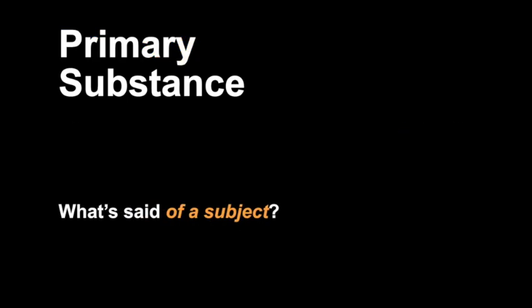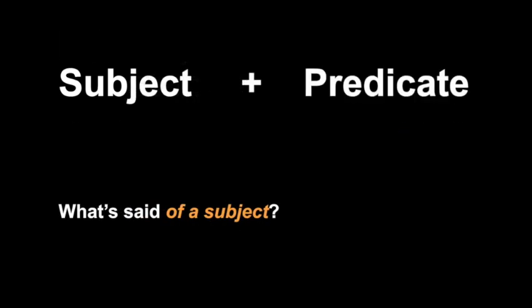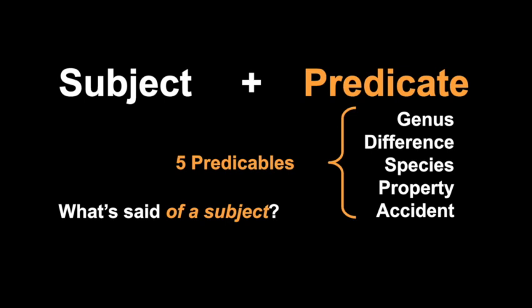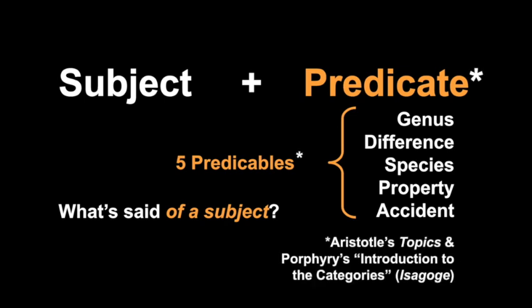So what is said of a subject? There are five different kinds of predicate: genus, difference, species, property, and accident. These are the five predicables. They are introduced by Aristotle's Topics and developed by Porphyry's introduction to the Categories, or Isagoge.